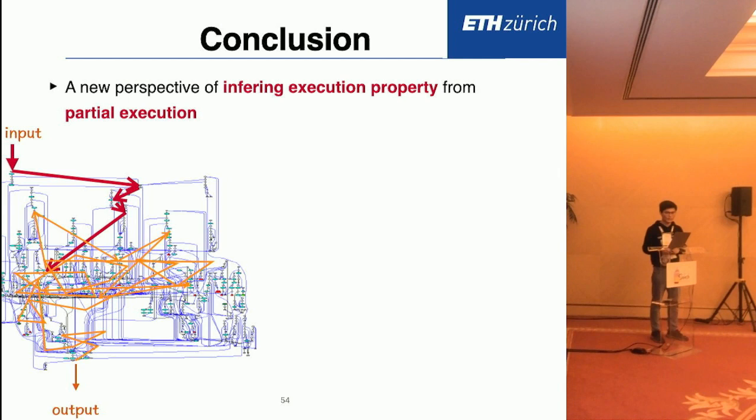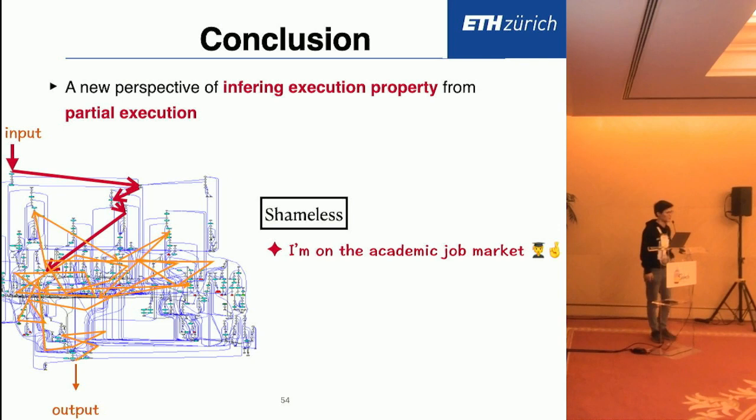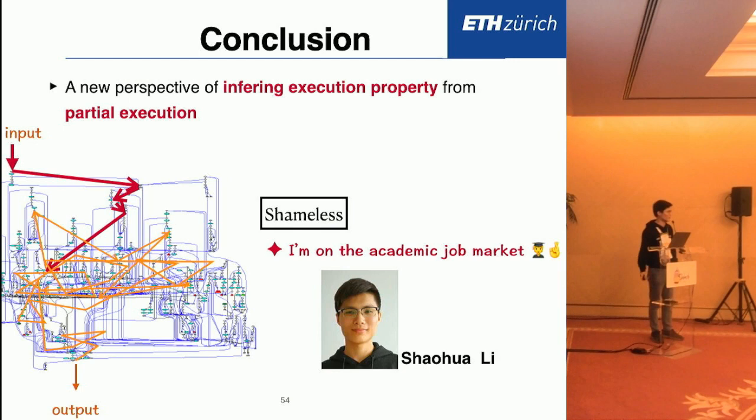In conclusion, in this paper we provide a new perspective of inferring the whole execution property based on partial execution. For this partial execution, we simply use the basic block IDs—the unique ID of them. We don't explore the further rich information such as memory states or variable values along this way. We envision this new concept of prefix-guided execution can also benefit a lot of downstream tasks. Finally, some shameless introduction: I'm on the academic job market now. I'm Shaohua from ETH Zurich, working on undefined behaviors and compiler correctness. If you're interested, you can reach out to me. The end.